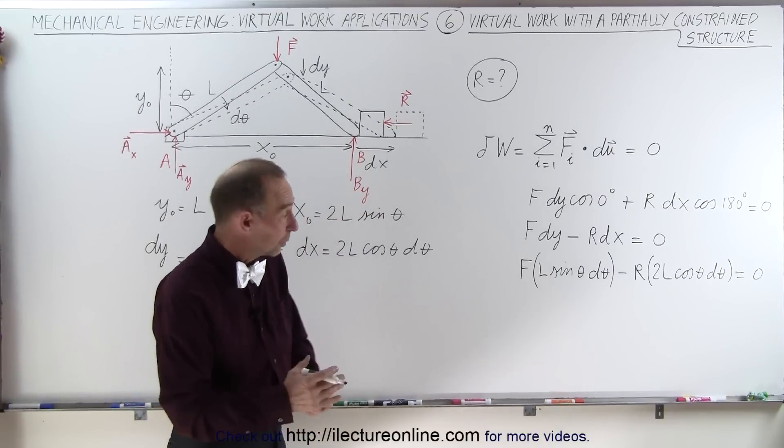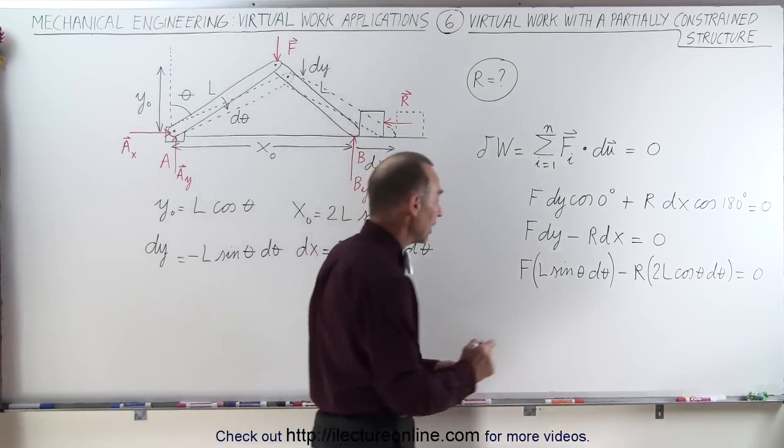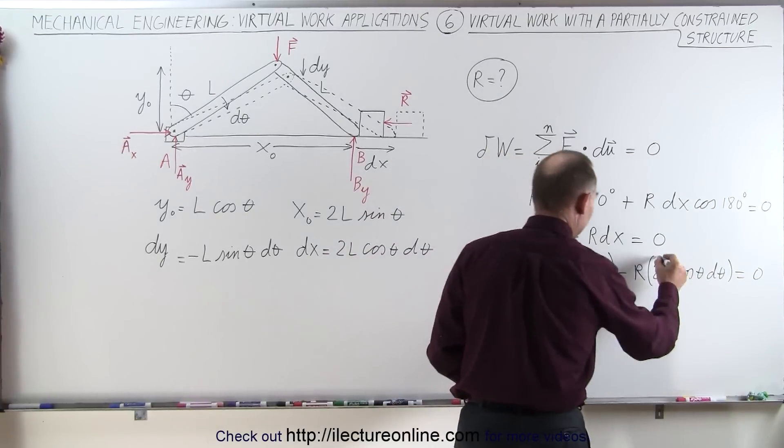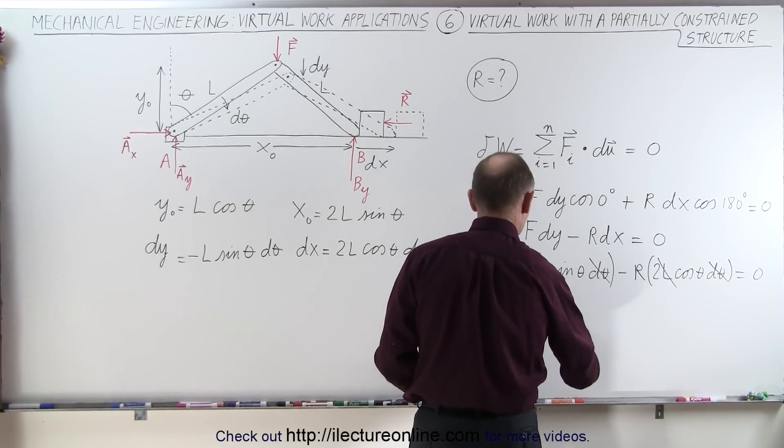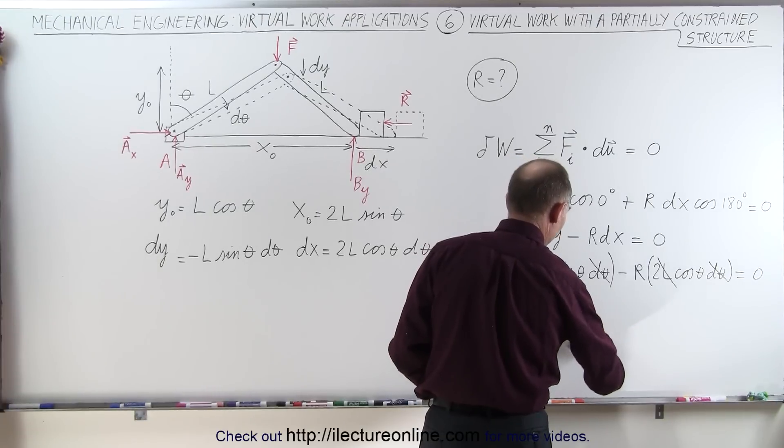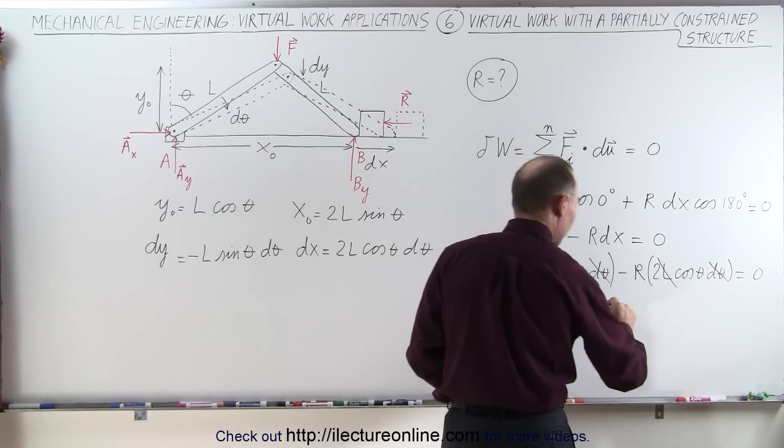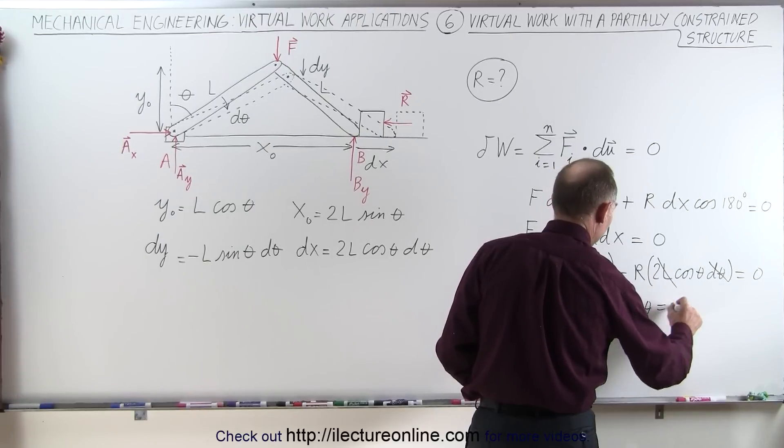Now notice, since it's equal to zero, we can factor out an L, we can factor out a d theta, so we divide both sides by L, we can divide both sides by d theta, and now we're left with F times the sine of theta minus 2R times the cosine of theta is equal to zero.